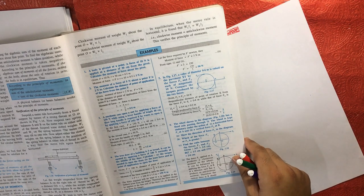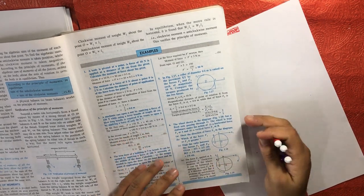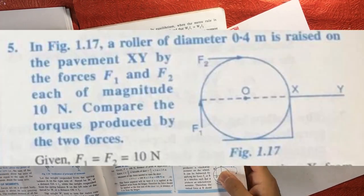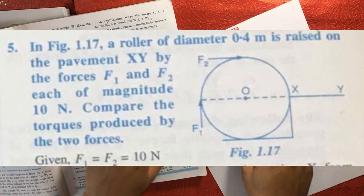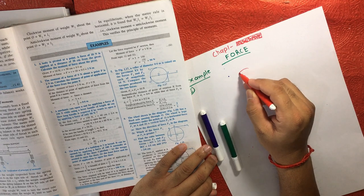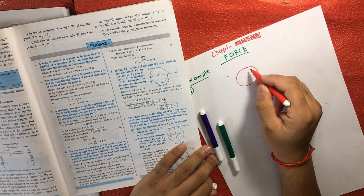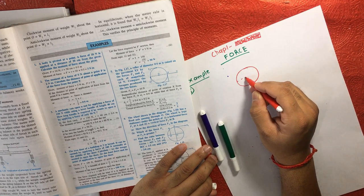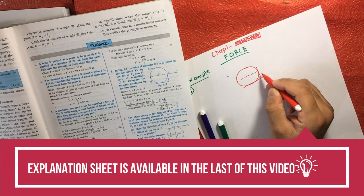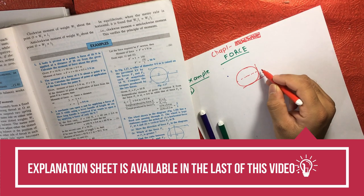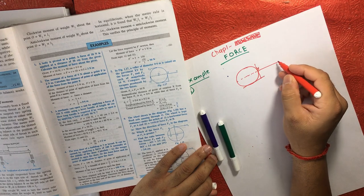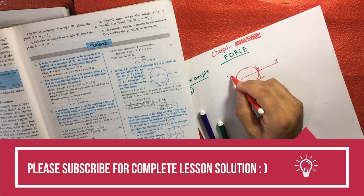In example 5, referring to figure 1.17, let me just draw the figure first. This is a roller, and this roller is resting at a surface. This is the surface, marked as X and Y, and there are two forces applying on this roller.